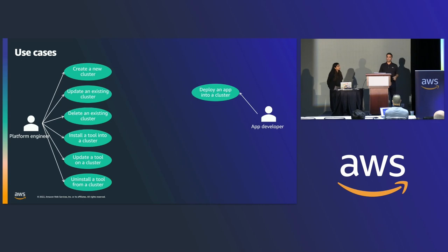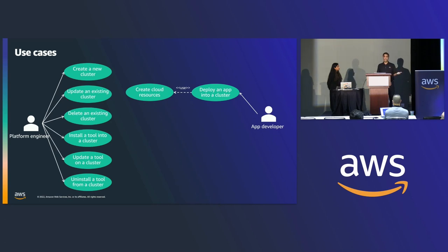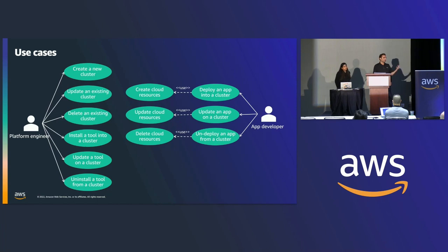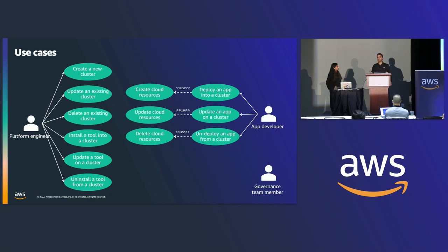Another persona is application developers. They should be able to deploy applications into provisioned clusters. Sometimes these applications consist of native Kubernetes objects like deployments, services, and config maps, and may have dependencies on cloud resources like DynamoDB or S3. Application developers need to provision these cloud resource dependencies as part of deployment and be able to roll out new releases and make associated changes to cloud resource dependencies. They should also be able to undeploy applications when no longer needed.